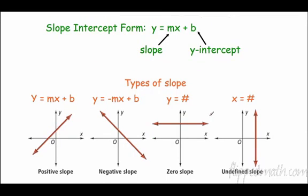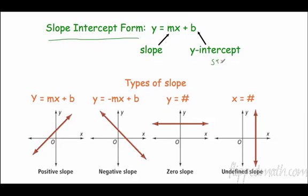Moving on — a lot of information here. You guys know this by now: slope-intercept form, y equals mx plus b. M is the slope, b is the y-intercept, also known as our starting point or initial value. Those are all important words to remember.